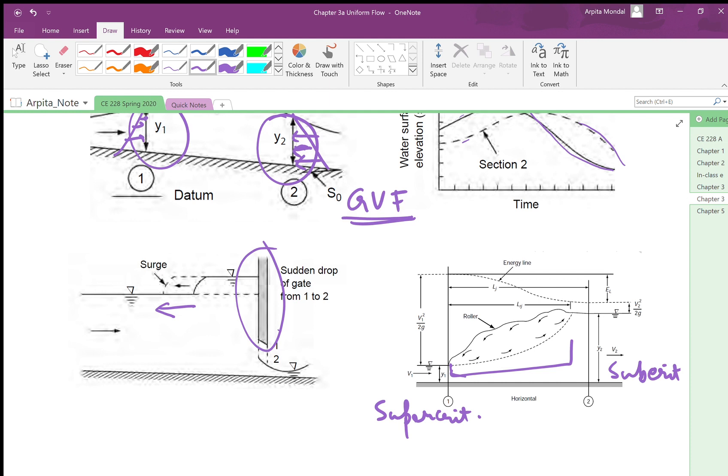This is where the rapidly varying flow takes place, so we have our case C—case C is rapidly varying flow. We are going to discuss in detail uniform flow in the next few videos, see you.